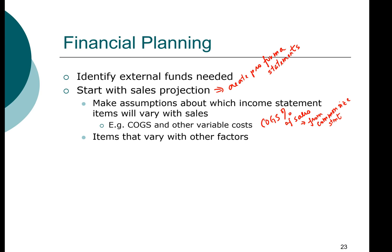Not all items will vary with sales. There are other items that may vary with other factors. For example, the amount of tax you will pay will depend on taxable income. The key is that once you identify what the dependent variable is, you can figure out what the appropriate factor to use. We know that tax depends on taxable income, and we know the marginal tax rate. So if we know the projected taxable income, we can look up the relevant tax rate and compute the projected future tax liability.